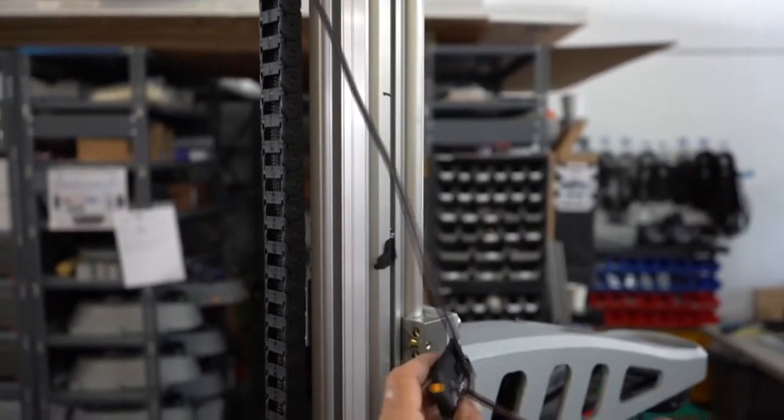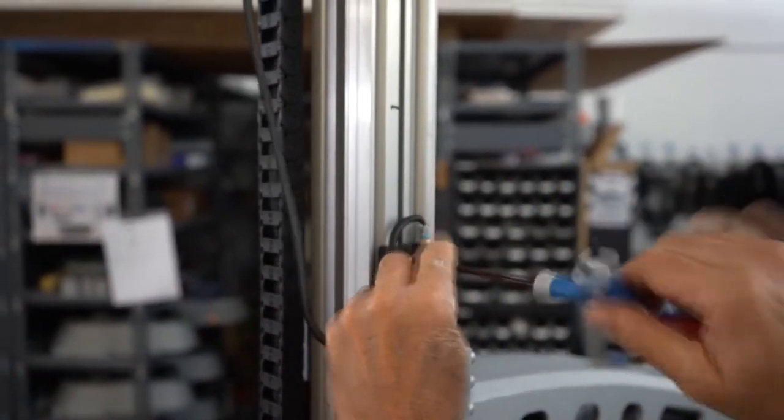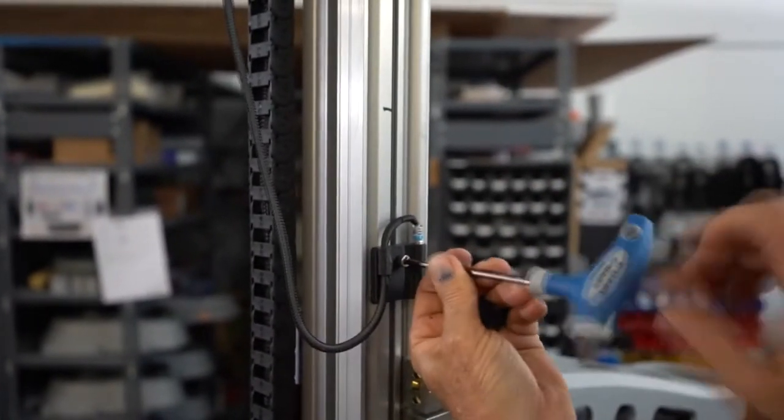On the side of the Z-rail, there is a square nut already in place. Take the Z-probe sensor and attach it to this rail nut.